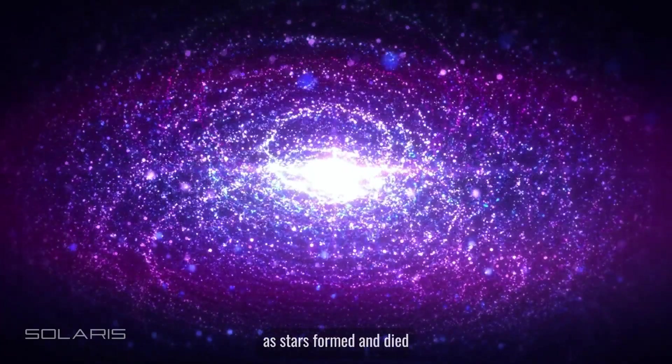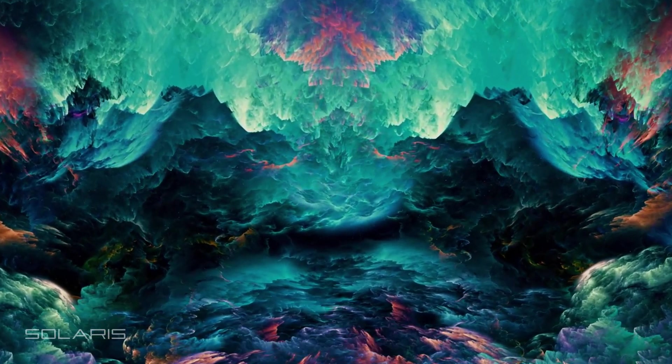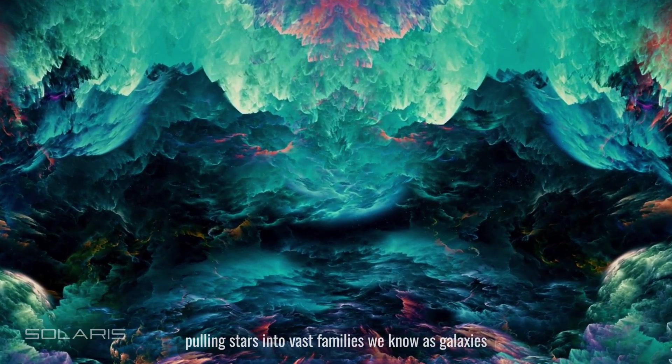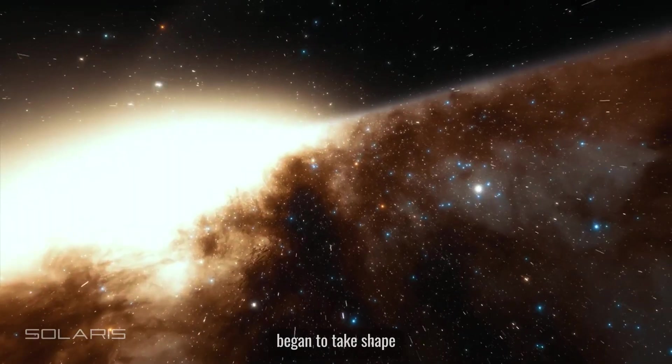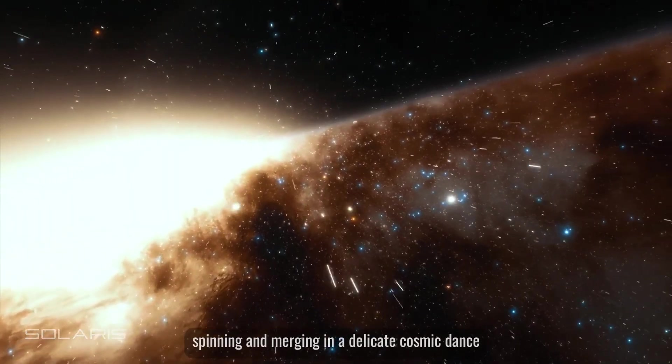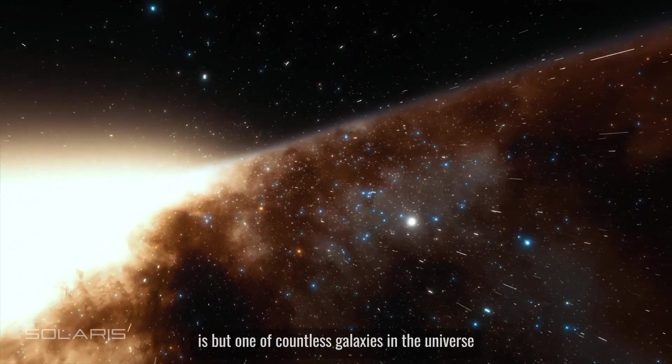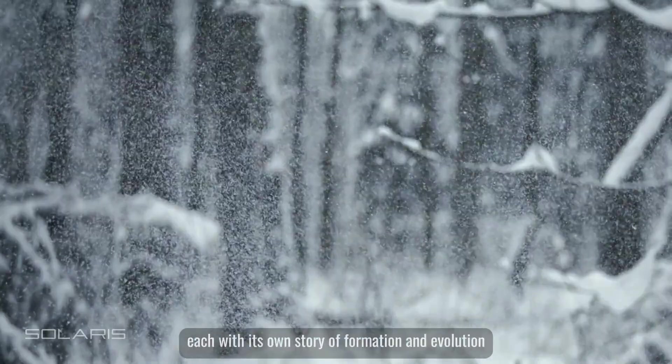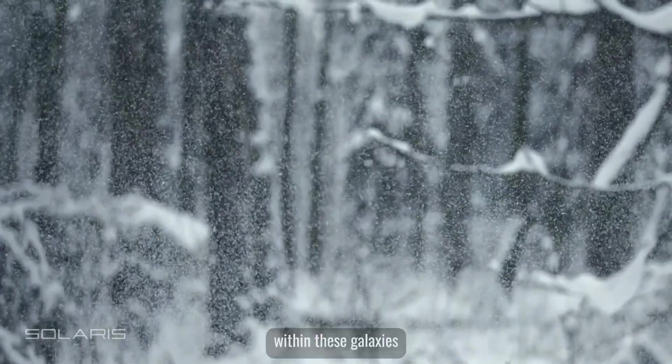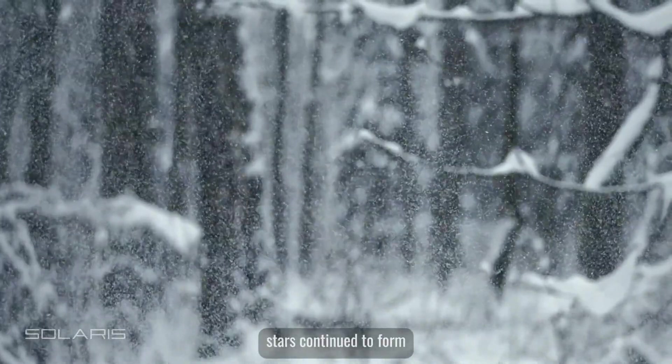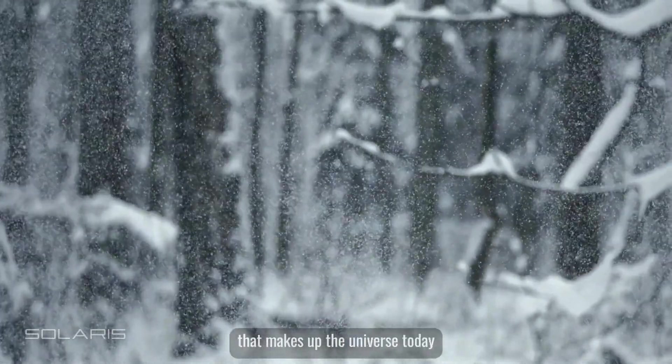As stars formed and died, they did not do so in isolation. Gravity once again worked its magic, pulling stars into vast families we know as galaxies. These galaxies, each a collection of billions of stars, began to take shape, spinning and merging in a delicate cosmic dance. The Milky Way, our galactic home, is but one of countless galaxies in the universe. Within these galaxies, stars continued to form, live, and die, creating the complex chemical richness that makes up the universe today.